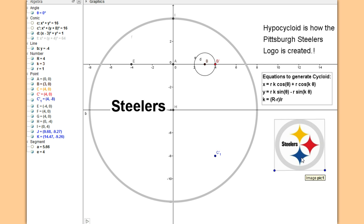Here's the Pittsburgh Steelers logo. You'll see each one of these is a hypocycloid. There are four of them in each emblem.